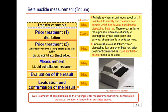Also on page 15, tritium is introduced. Tritium is included in water, and as it is a very weak beta ray, for prior treatment it is necessary to distill and concentrate it. It is then taken in a glass vial jar, and after adding a special substance called liquid scintillator, it is measured in the liquid scintillation measurer. Overall, the measurement is completed in about a week, though the actual duration time will be a little longer.